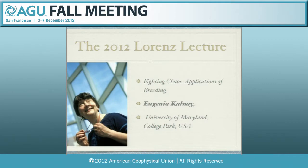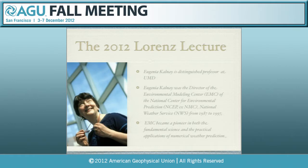Looking forward, we have to speak about the Lorentz Lecture of this year, 2010, which will be delivered by Eugenia Kalnay from the University of Maryland, College Park. It's about chaos directly — how to use chaos instead of just knowing it creates problems — with the application of breeding. Eugenia is a distinguished professor at the University, but before that she was for 10 years director of the Environmental Modeling Center, where she made several contributions to large programs, including reanalysis of 40 to 50 years of data.